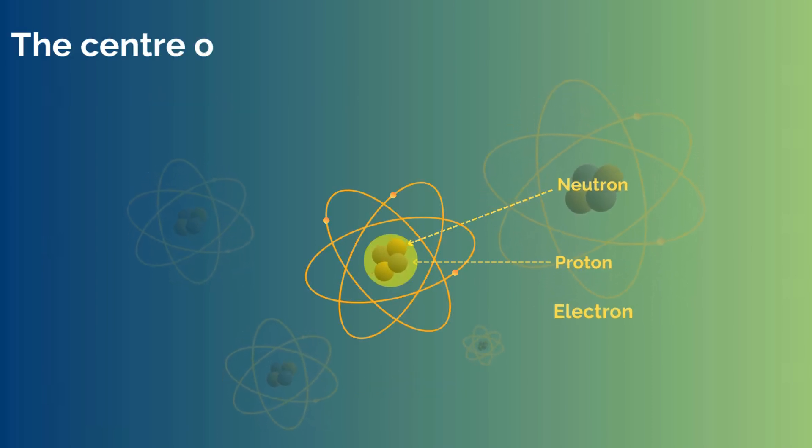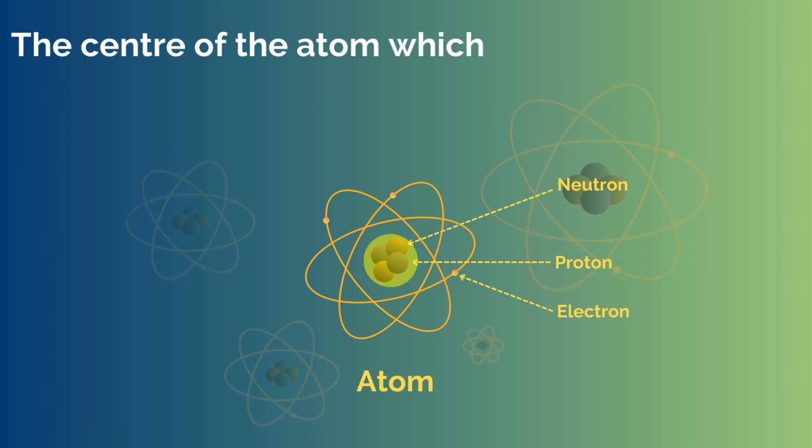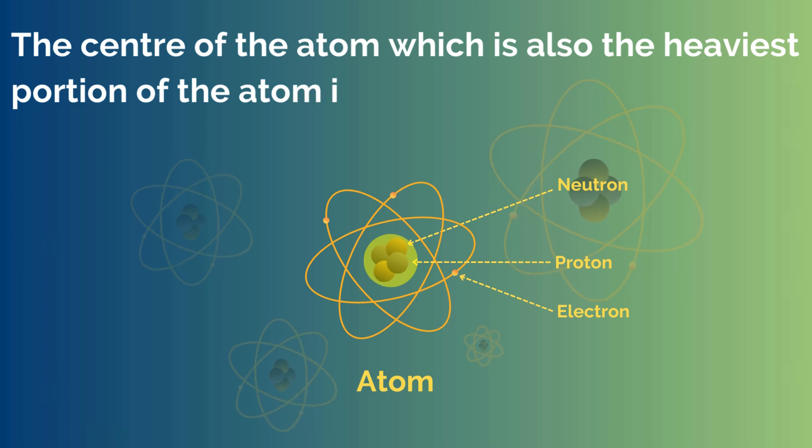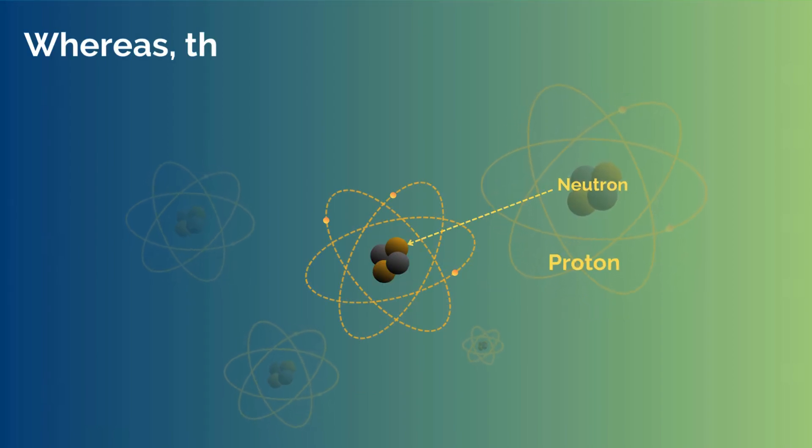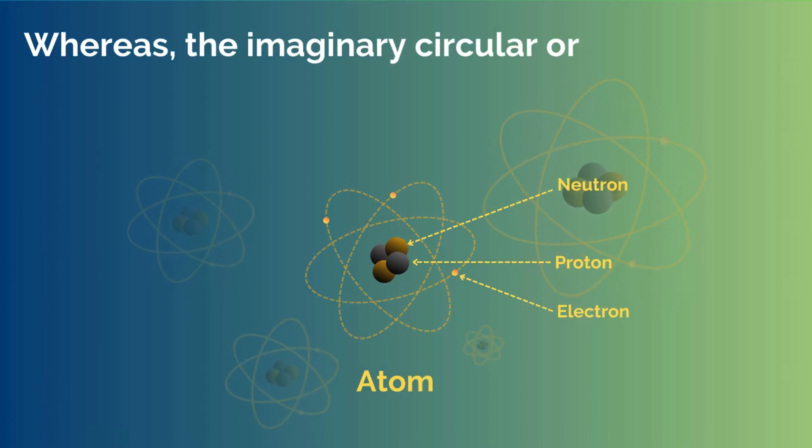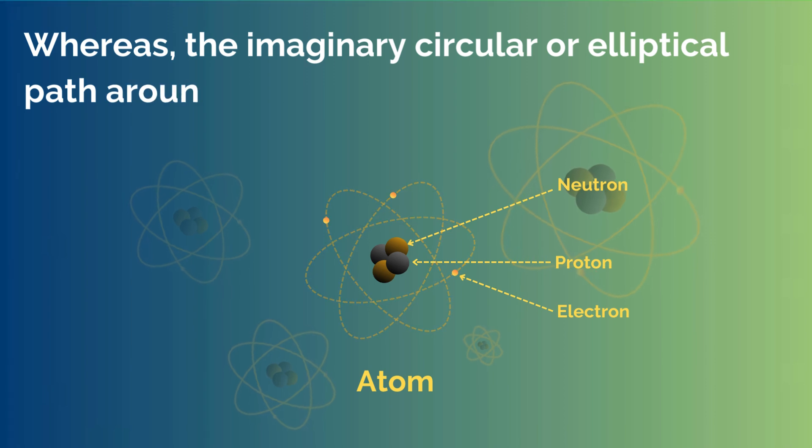The center of the atom, which is also the heaviest portion of atom, is called the nucleus. Whereas, the imaginary circular or elliptical path around the nucleus where electrons revolve are called shell or orbit.